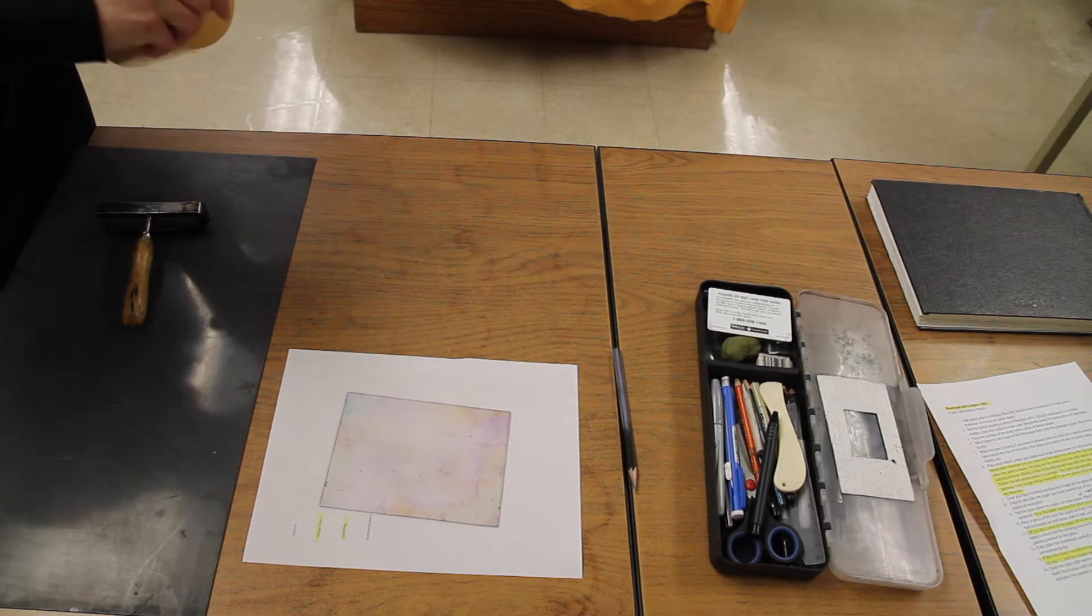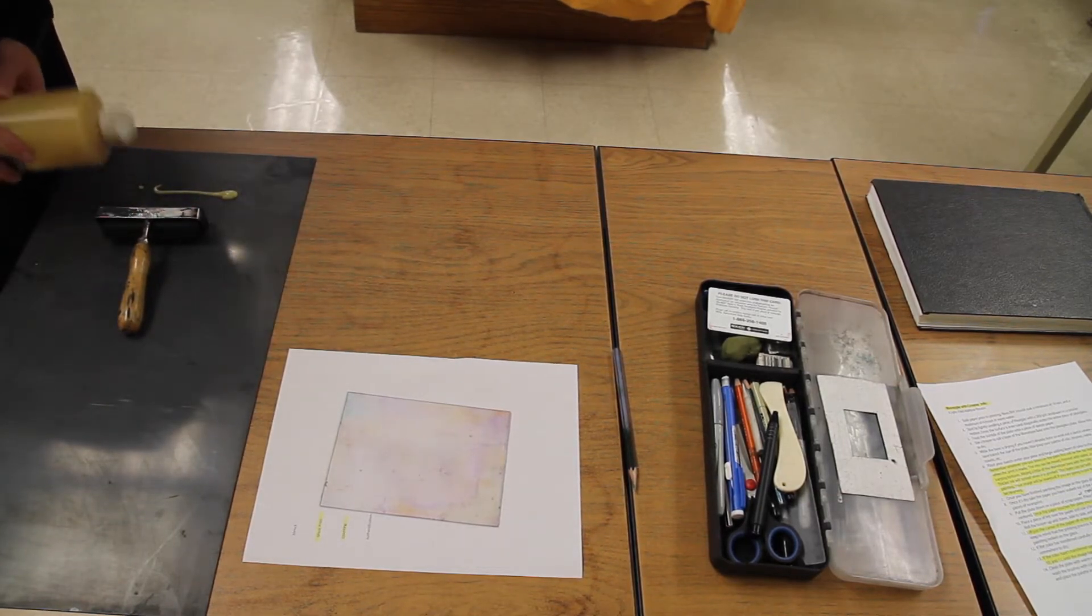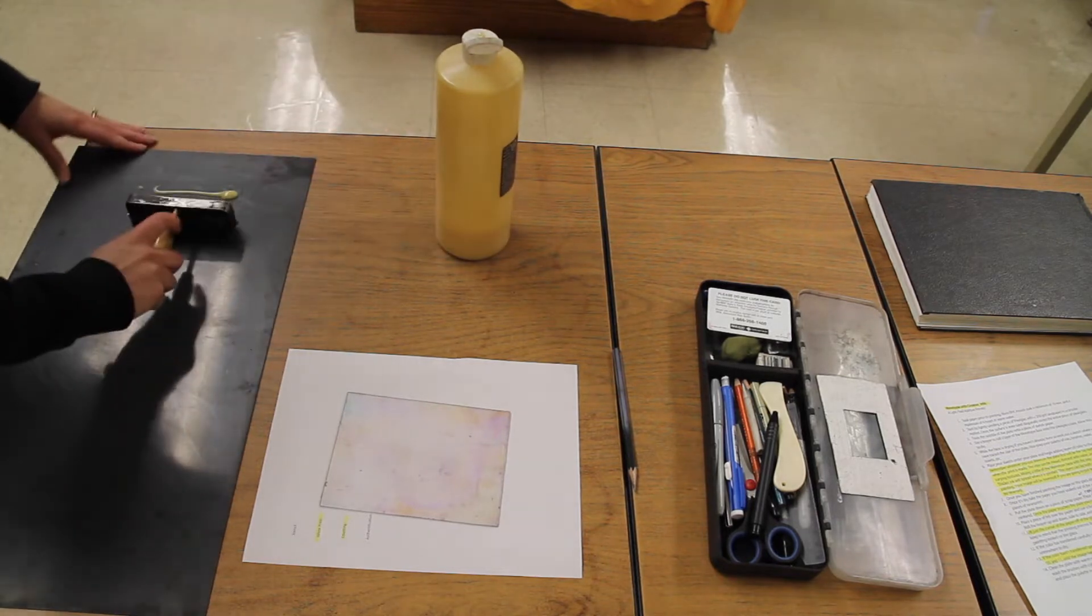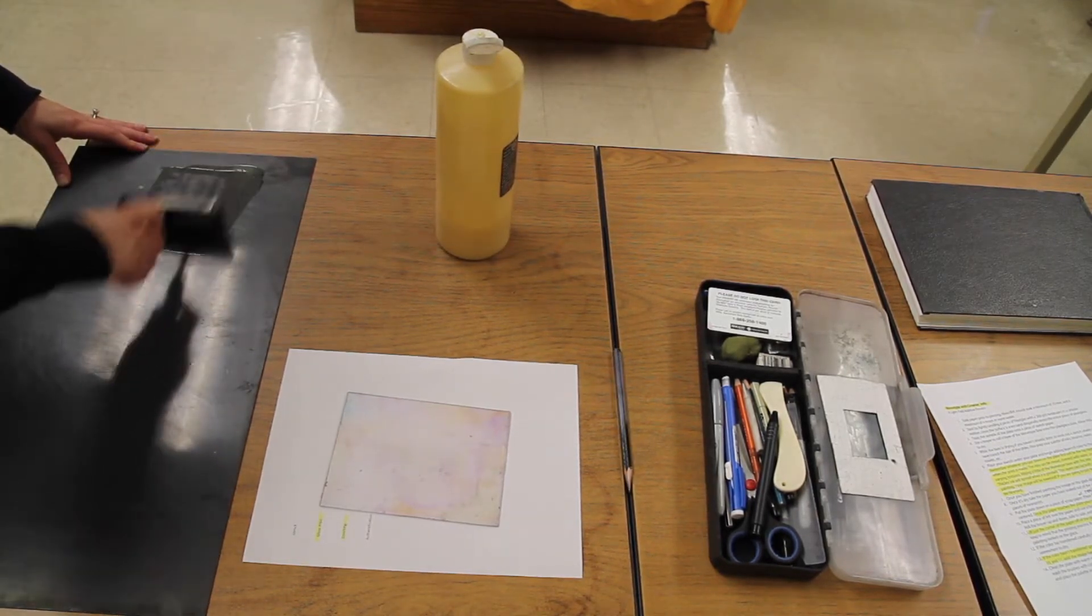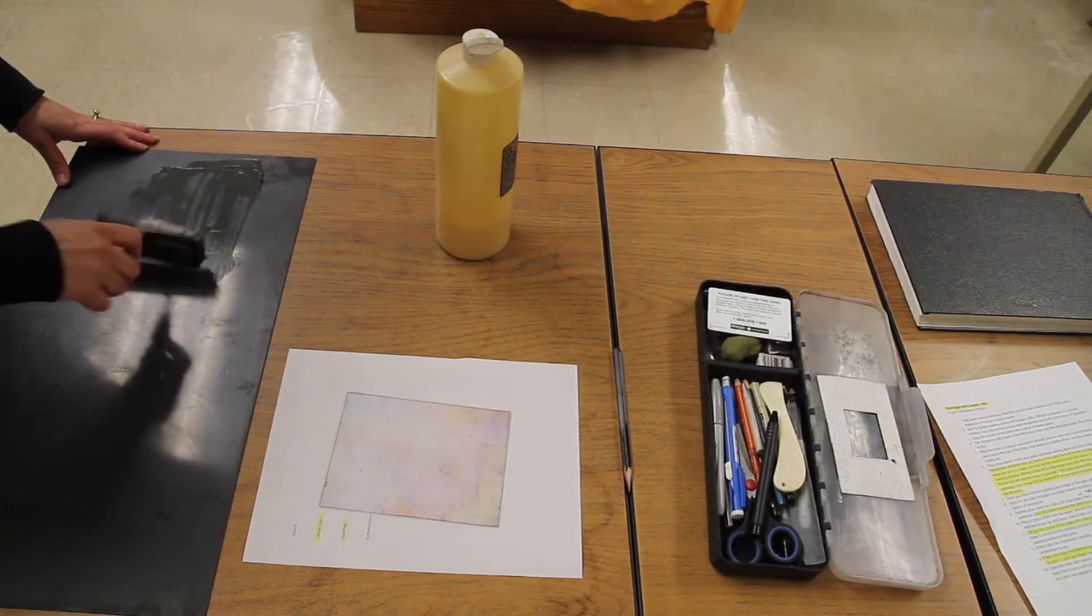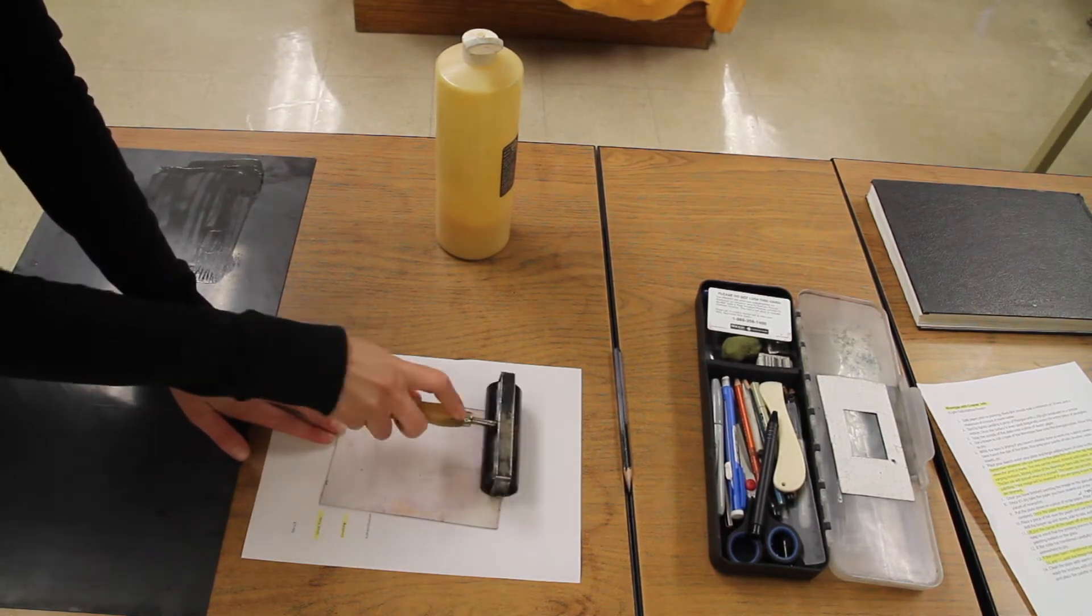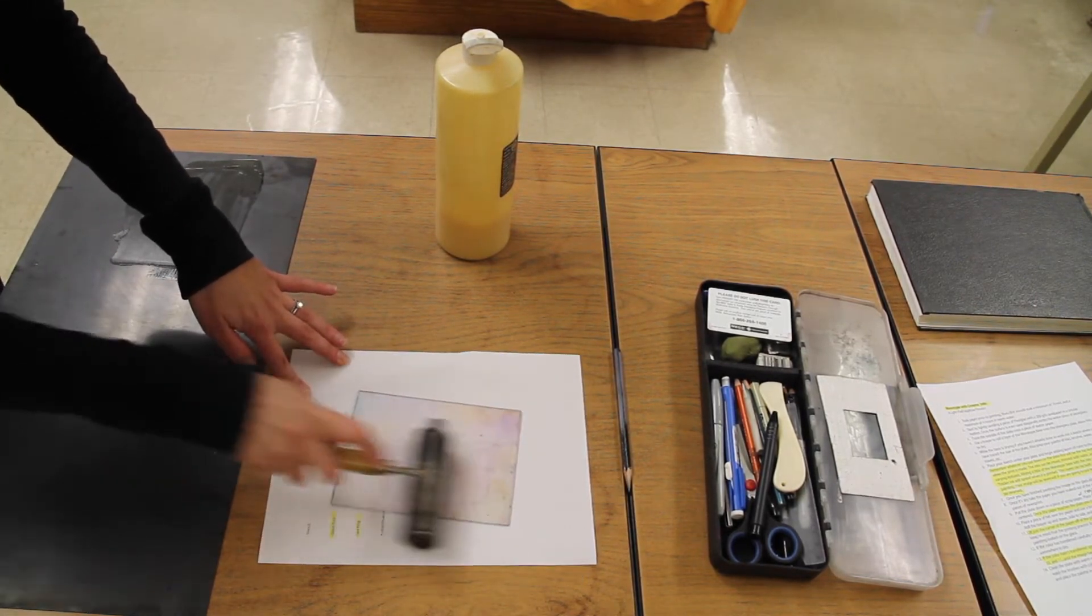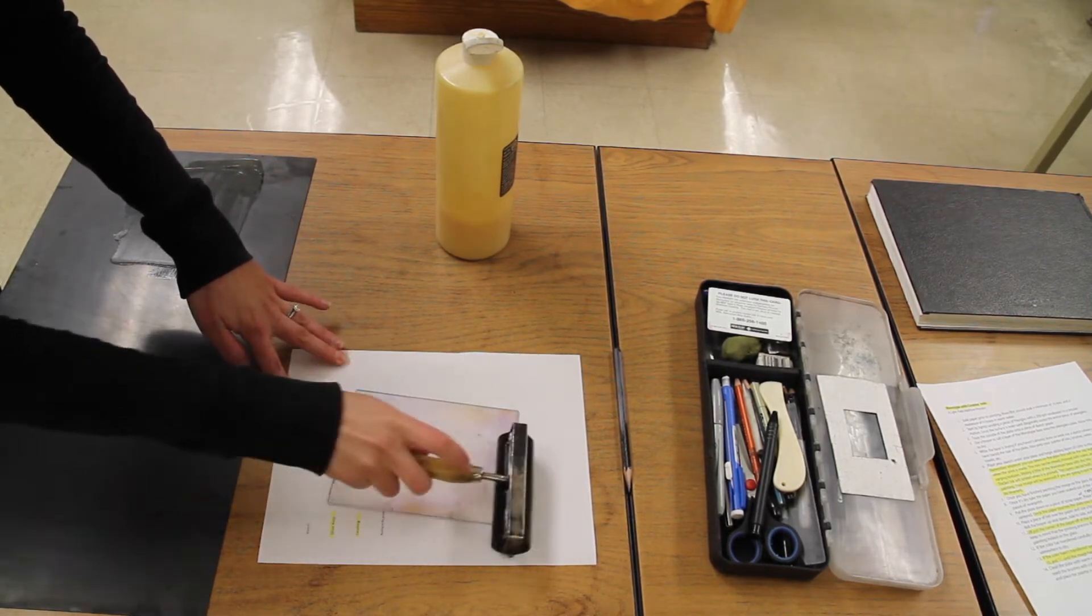I'm going to take my brayer and use this to coat the plate. You could also paint this on - I just find rolling it on with a brayer is maybe a little quicker. But this is an important step. If you forget this step, the ink doesn't release onto the paper very well and you might be disappointed with how your image turns out.